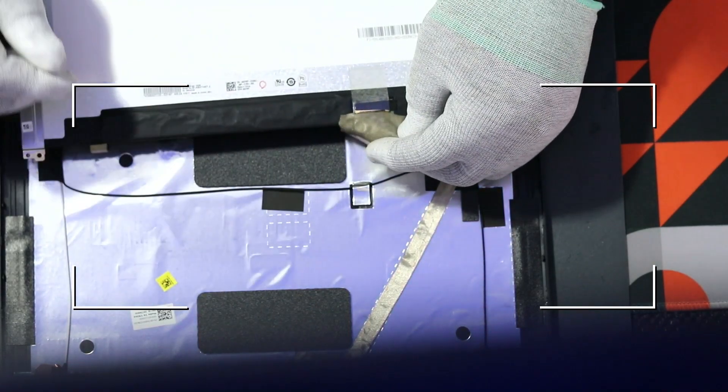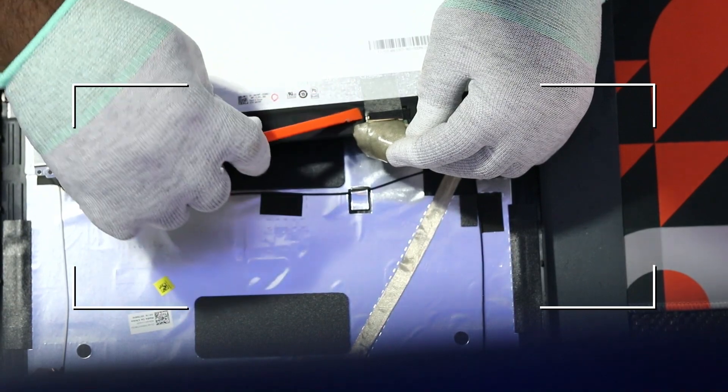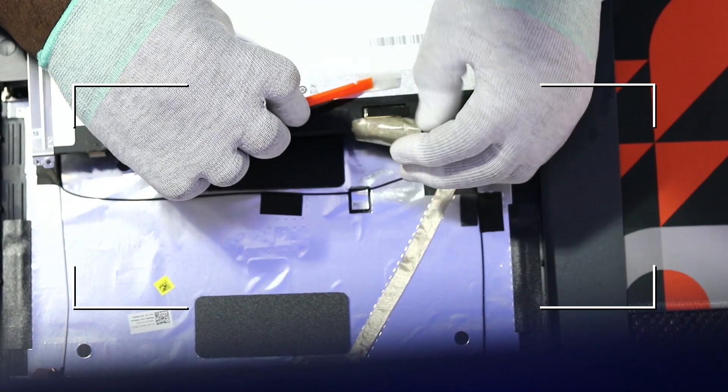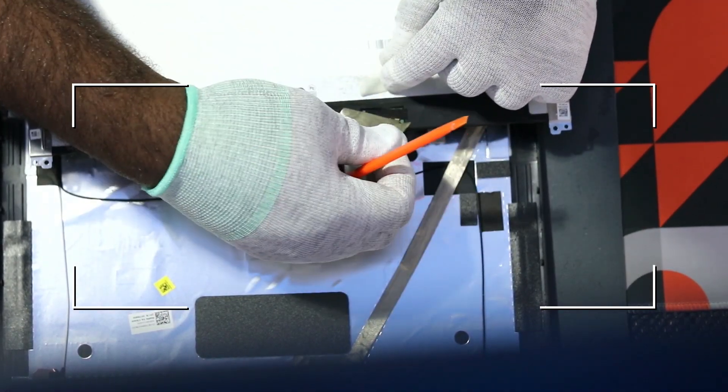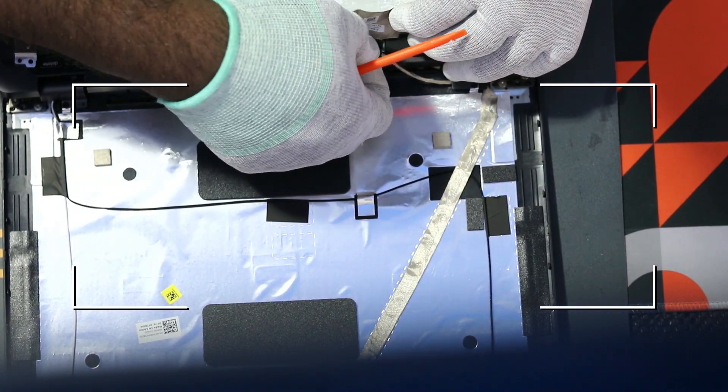Right there, as you can see, it's very easy to rip it apart. With a spudger, you can go ahead and remove all adhesive glue and then this cable right here.